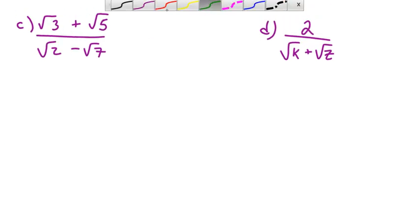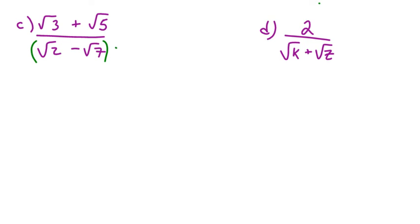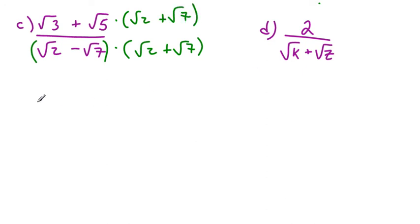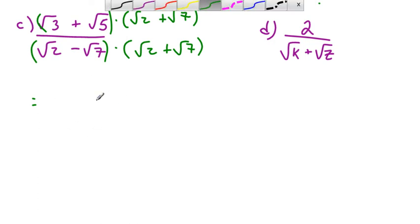Let's try Part C now. Again, we want to get rid of the radicals in the denominator, so we're going to multiply by its conjugate: radical 2 plus radical 7, over radical 2 plus radical 7. For the numerator, we have a binomial times a binomial — there's no cool shortcut here. We have to do the FOIL method.